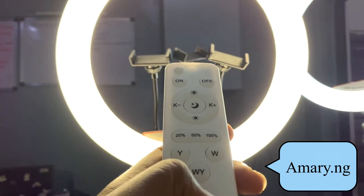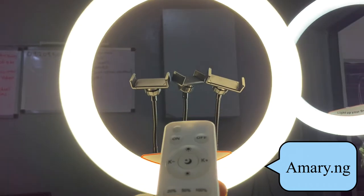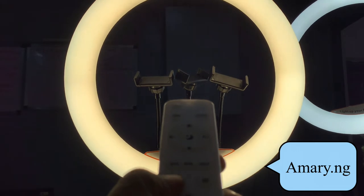Now it has this W, Y, and W Y button. That's the last button on the remote. The Y button is for making it yellow. As you can see, it's making the ring light yellow.